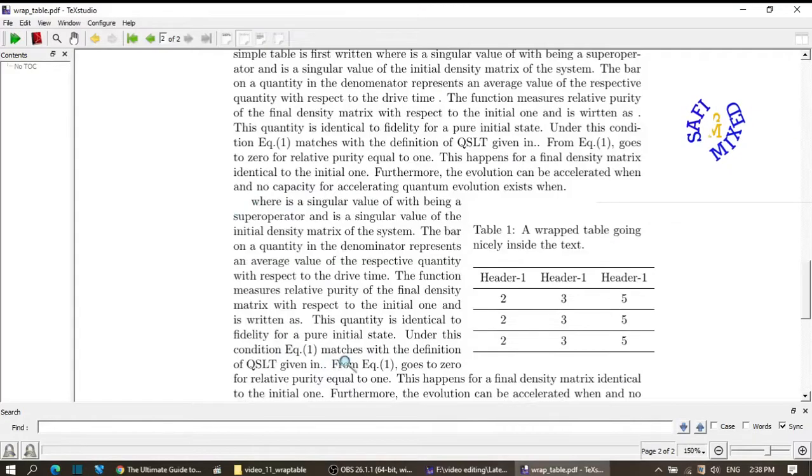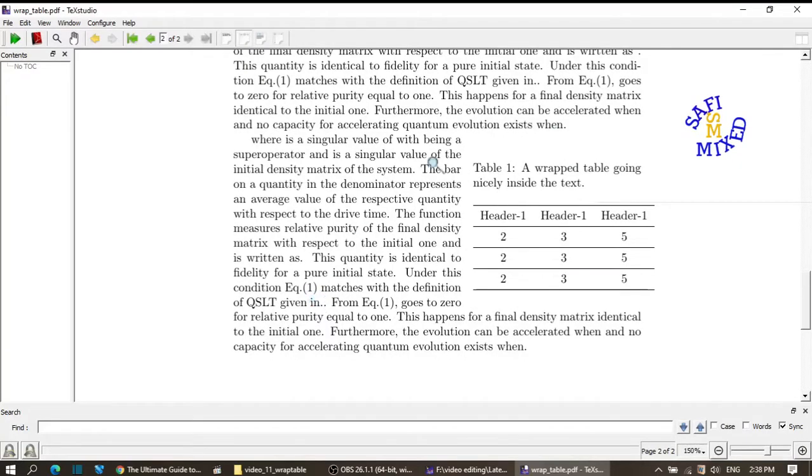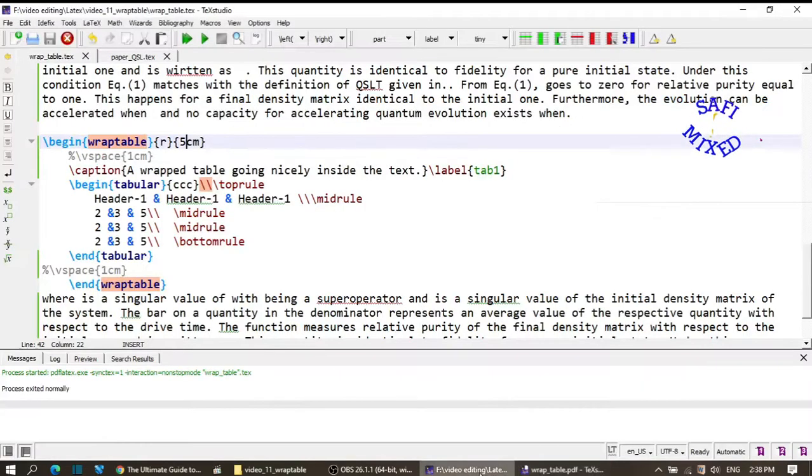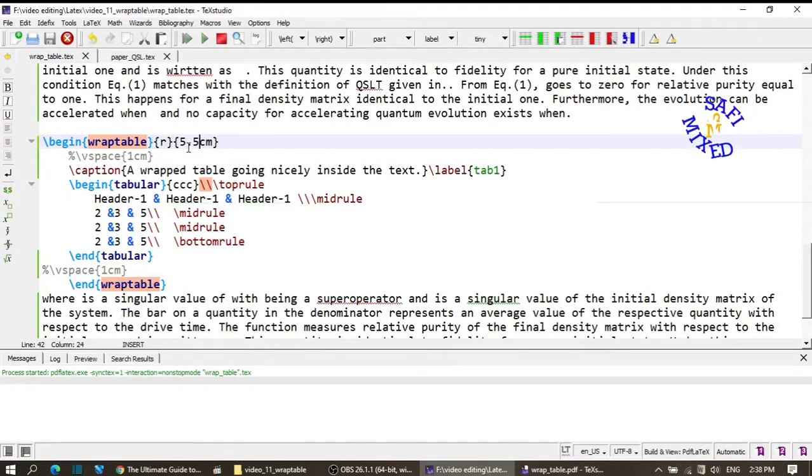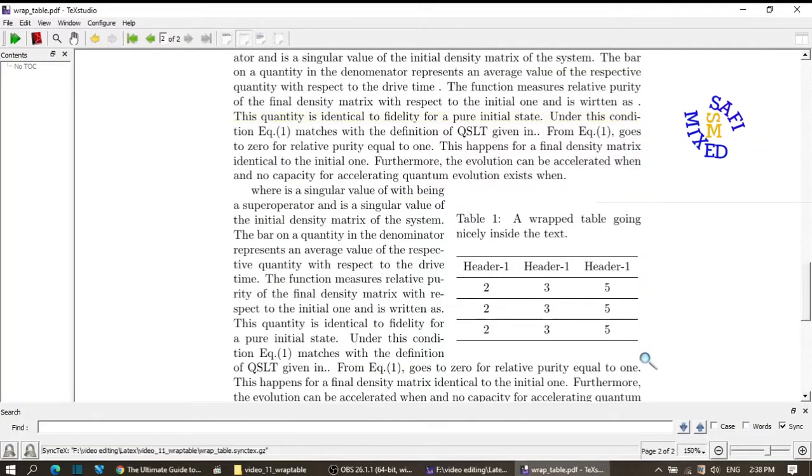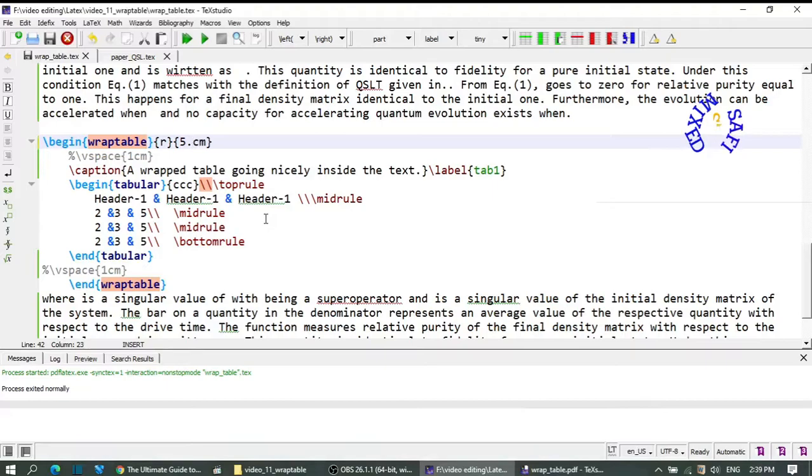Similarly, I can change this size of the page. For example, if I put it five, the size of the page that contains text has now increased and the size of the page which contains table is decreased. I would like to change this to 5.5 in order to have an optimal layout. Yes, now you see the table is exactly in line with the text and here also I have sufficient space.